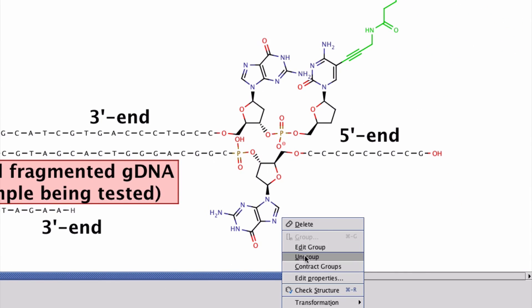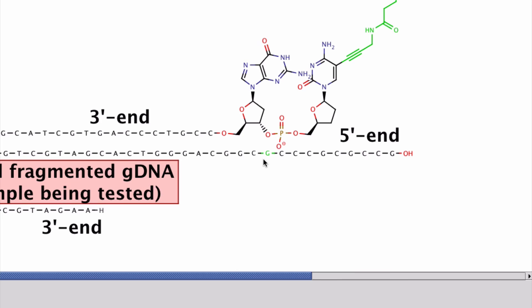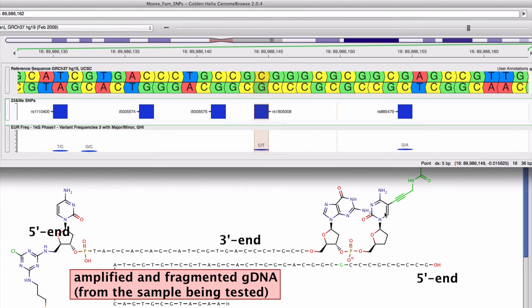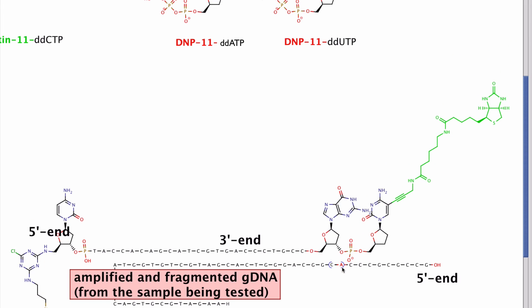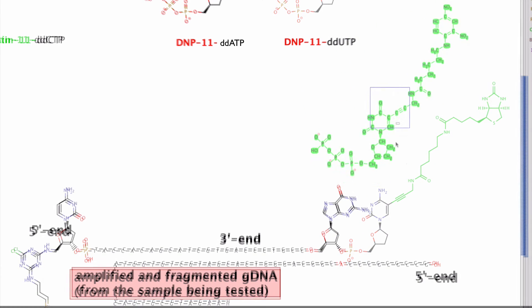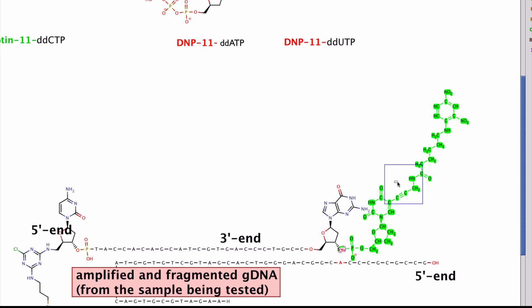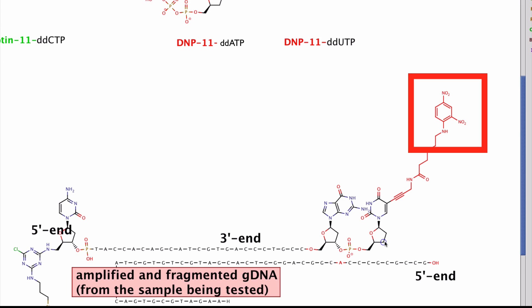So what if the SNP was something else? What if we had the minor sequence, the minor allele T? So if that were T, then the complementary group would be A. The complementary nucleotide is A. And so A is going to template the incoming T. So we'll see our bead glowing red since it's going to be attached to the thymidine nucleotide.